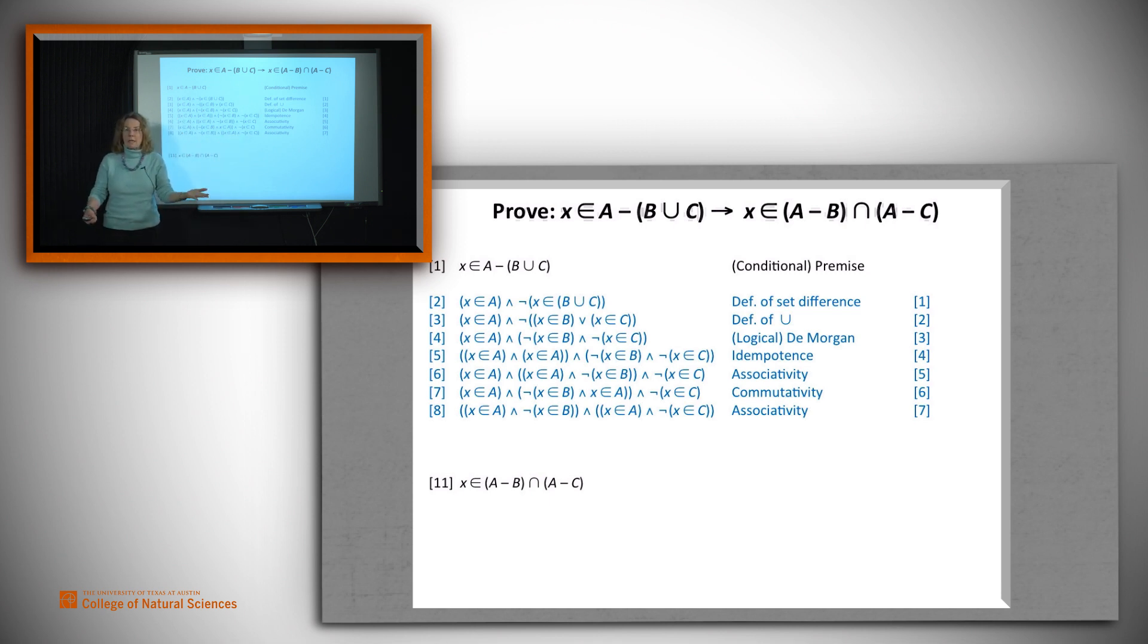At this point, let's reverse our process and go from logic back to set operations. And I showed two steps here together because we're going to do set difference in both of them. We have x as an element of A and not B. And using the definition of set difference, that says it's in A minus B. And similarly, here we have x as an element of A and not C. And we get that x is in A minus C.